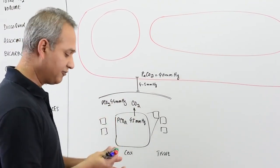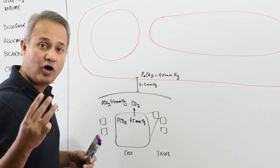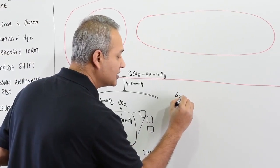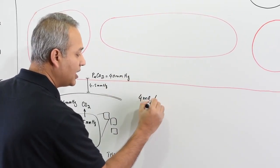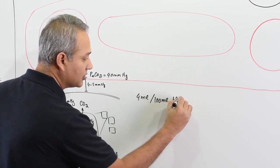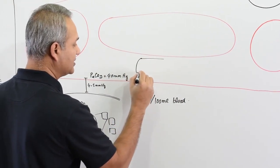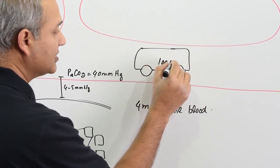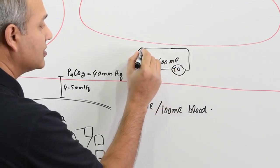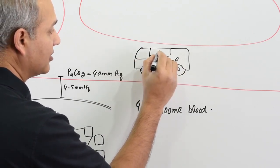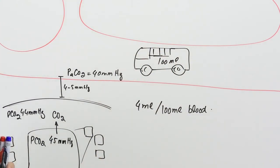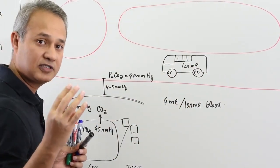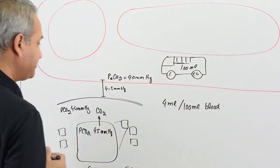Inside the capillary we have RBCs, proteins, and other components. Let's look at the three forms of carbon dioxide transport. First, keep in mind that 4 milliliters of CO2 are moved per 100 milliliters of blood. Think of it like a bus — one bus of 100 mL of blood will carry 4 mL of CO2, compared to 20 mL of oxygen.